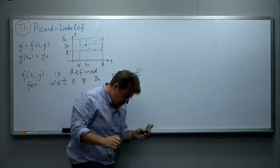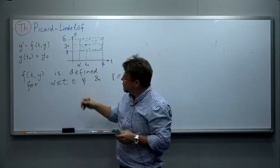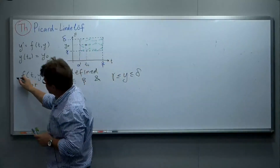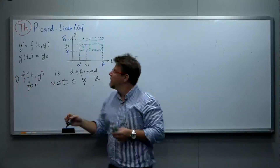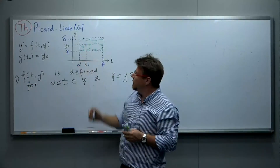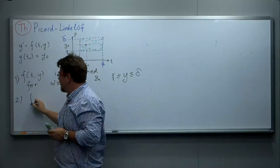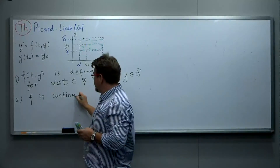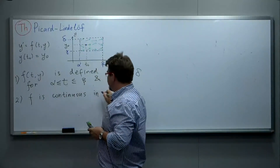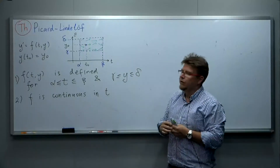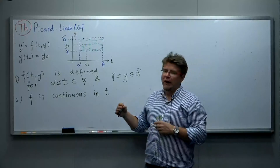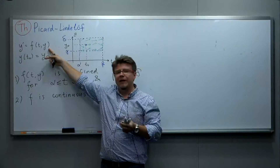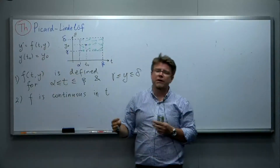Furthermore, there are two more technical conditions in order for the theorem to be true. The first assumption is that f is defined in a rectangular neighborhood of the initial point. The second condition is that f is continuous with respect to t — meaning if we fix y to be any specific number, then f becomes a function of t and we require it to be a continuous function of t.